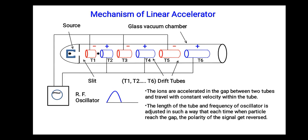So the negative half cycle starts. The length of the tube and frequency of the RF oscillator is adjusted such that when the particle reaches the gap, the polarity of the AC signal changes or interchanges. See here, now the negative half cycle starts, and during the negative half cycle, the polarity of those tubes gets interchanged.